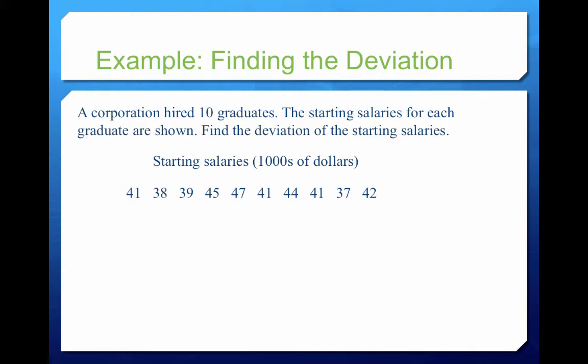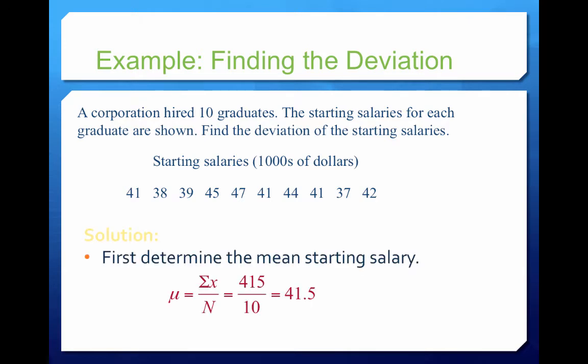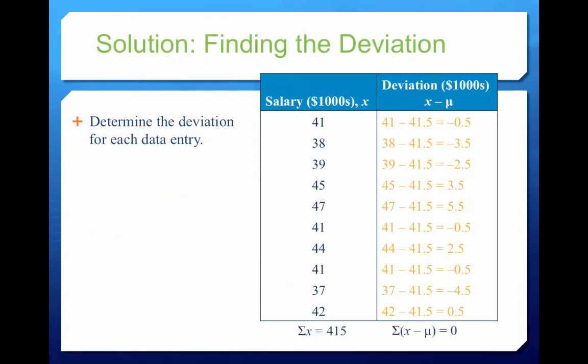Let's find the deviation of the starting salaries. First we need the mean. This is a population because it represents all ten graduates the corporation hired — not a subset. We add up all values and divide by ten to get mu = 41.5, or $41,500.